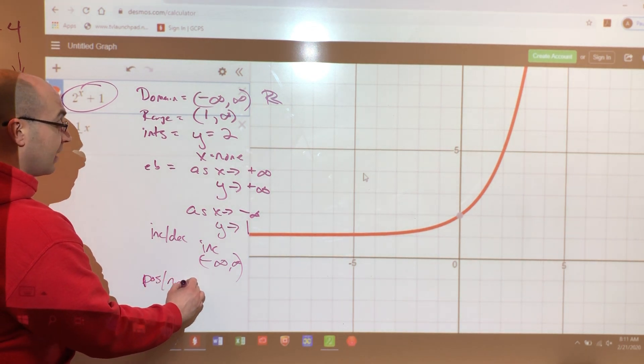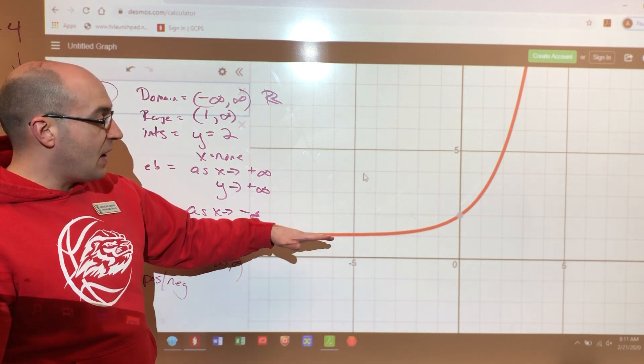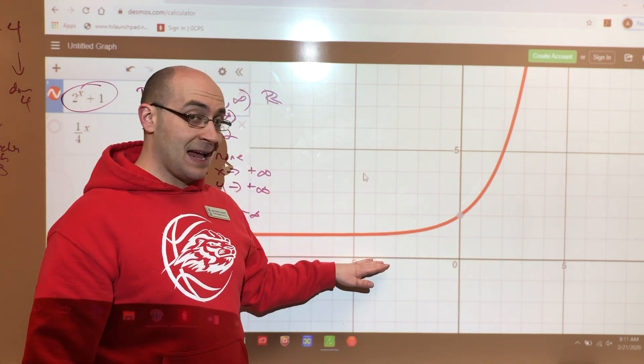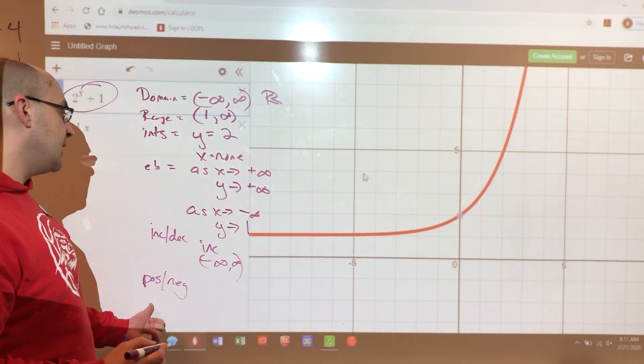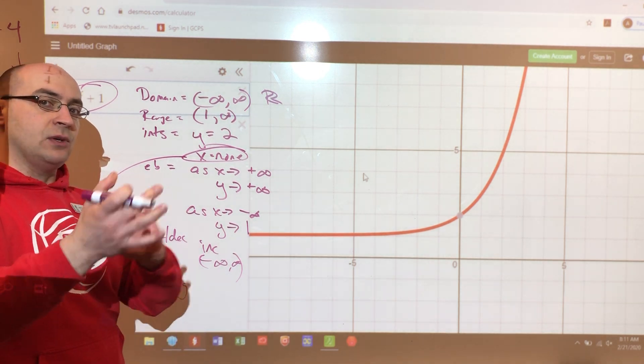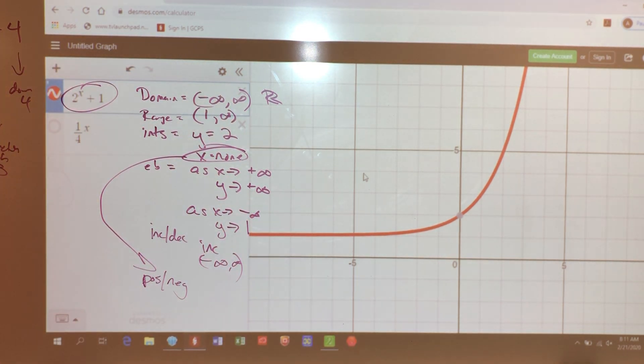Positive, negative, I wouldn't worry too much about. But just know that when positive, it's above the x-axis. Well, this is above the x-axis forever. Now, if I were to make this go down a couple of units, just tell me where it crosses the x-axis. So positive and negative is important when you know if there are x-intercepts. You can tell me where it's below and where it's above. So just be aware of that. I don't know if you're going to see it, but just be aware.